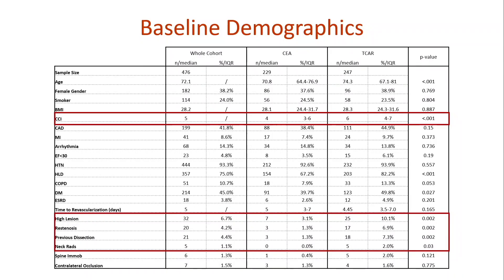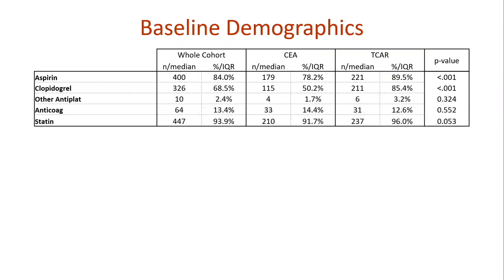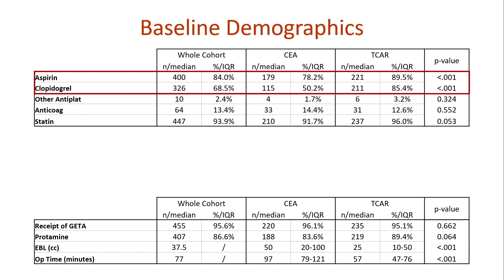Not only were TCAR patients sicker physiologically, but anatomical risk factors — high lesion, restenosis, previous neck dissection, or neck radiation — were all significantly more present in the TCAR cohort. Preoperative aspirin and clopidogrel were more frequently found in the TCAR cohort, while single antiplatelet was more common in the CEA cohort. DAPT was not 100% in the TCAR cohort because about 12% were on anticoagulation. Statin adherence was high at 96%. Estimated blood loss and operative time were shorter for TCAR. Most patients in both groups received general endotracheal anesthesia and protamine reversal at the conclusion of the case.